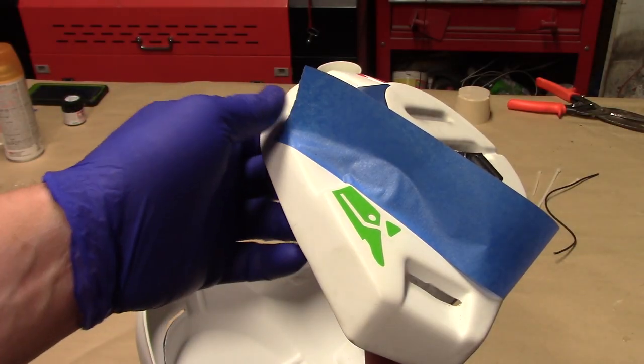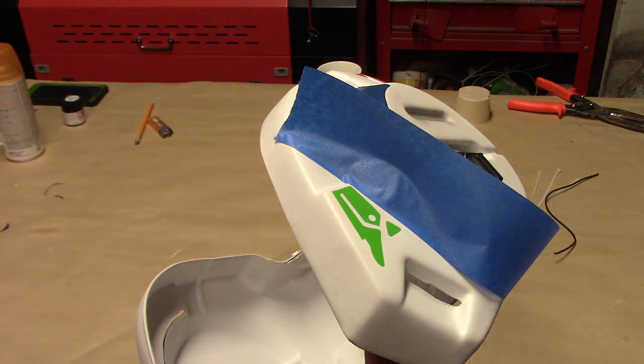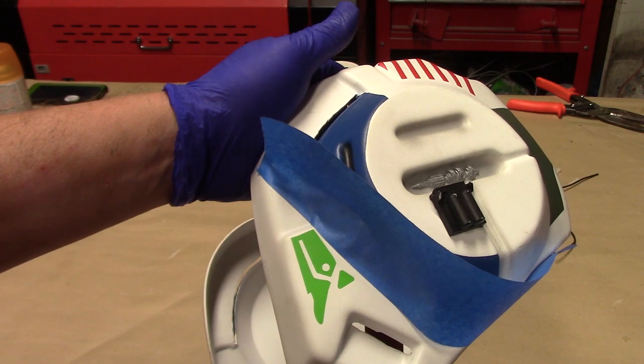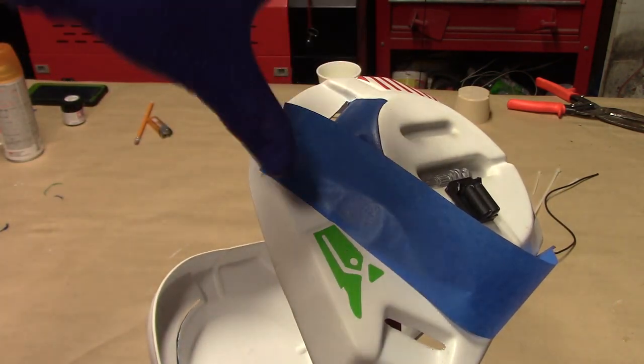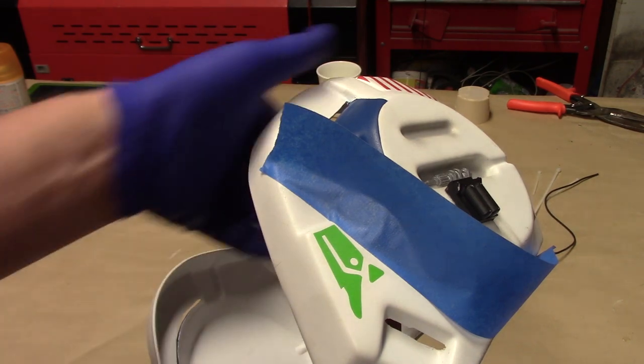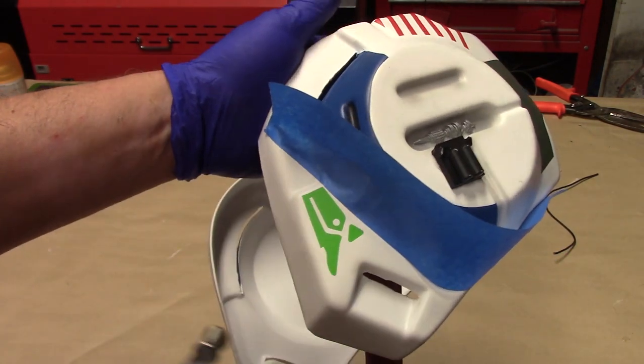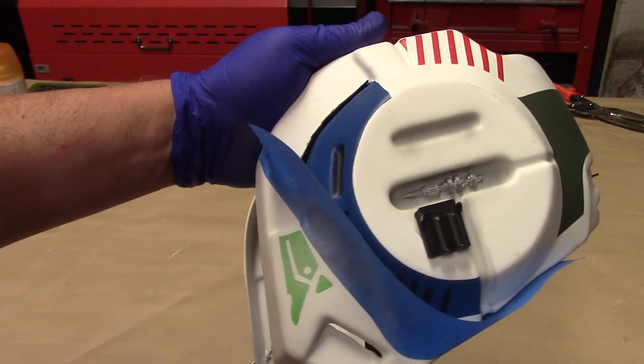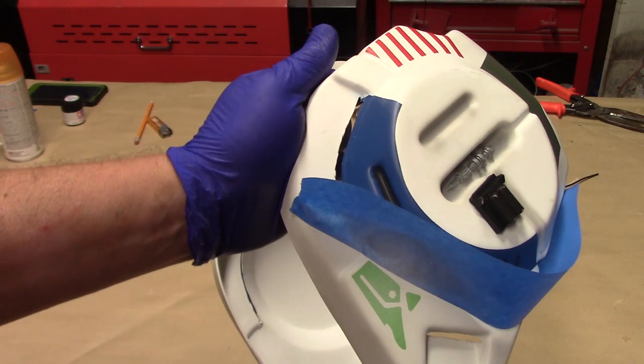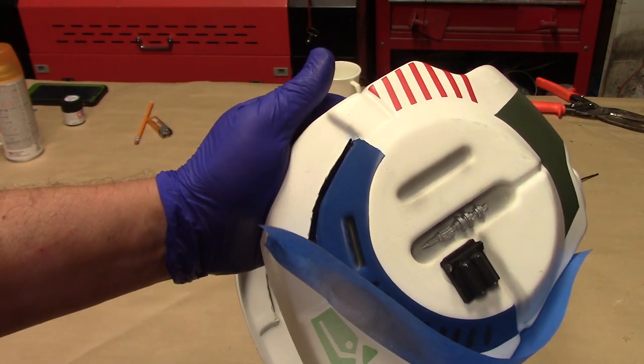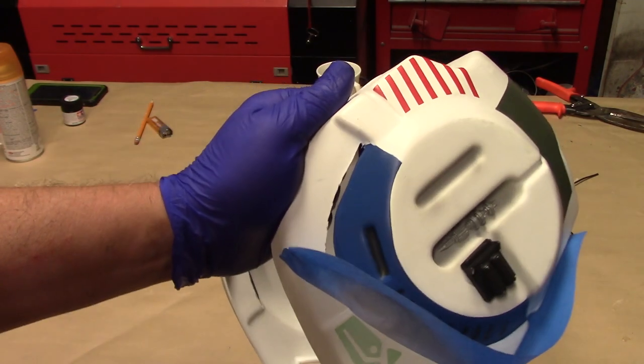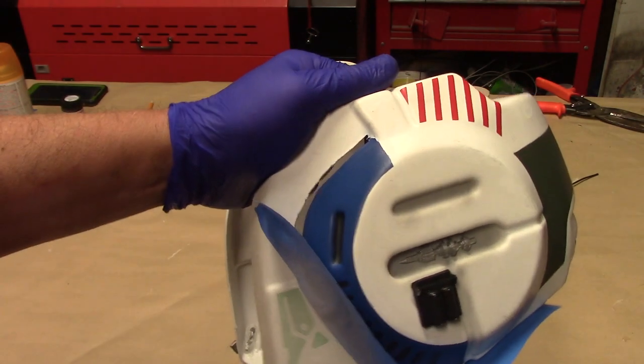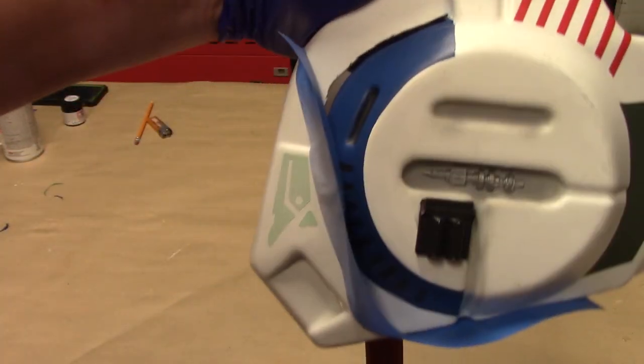The trick now is to get this green decal faded down. I've got flat white Tamiya. And I'm just going to, and I've got the rest of this helmet kind of just blocked off. I've got a nice wall here. So I'm going to very lightly start hitting this and make it fade away. And you can see it's a lot more subtle now.